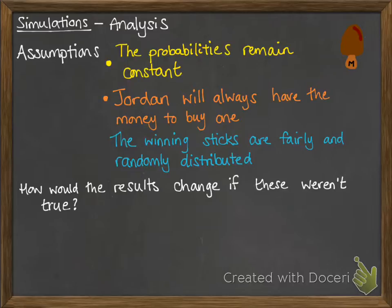If he didn't always have the money to buy one, the results of our simulation would be overestimating how often he would win, because with less money and buying fewer magnums, obviously the chance of him getting a winning stick will go down.